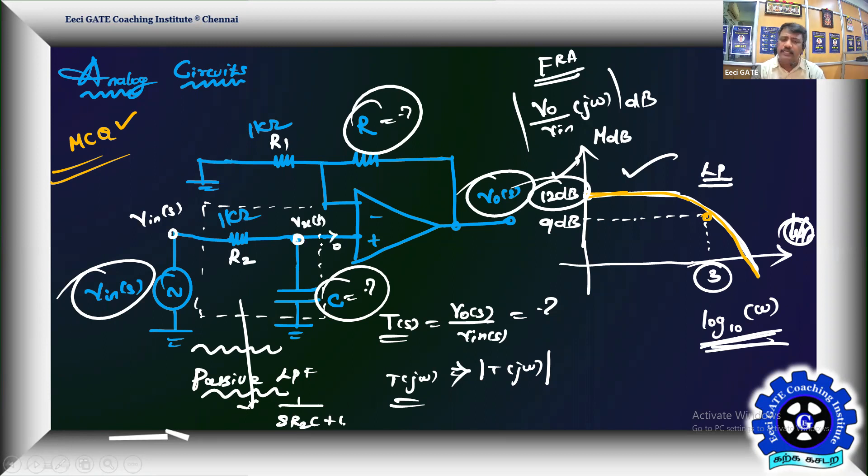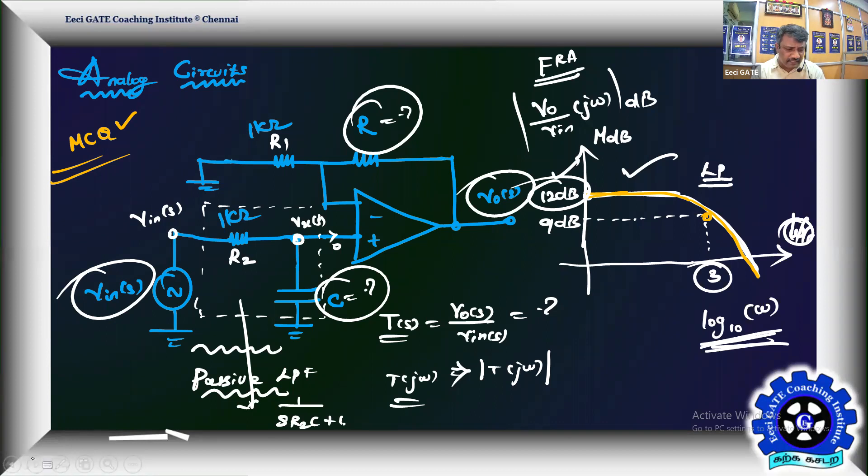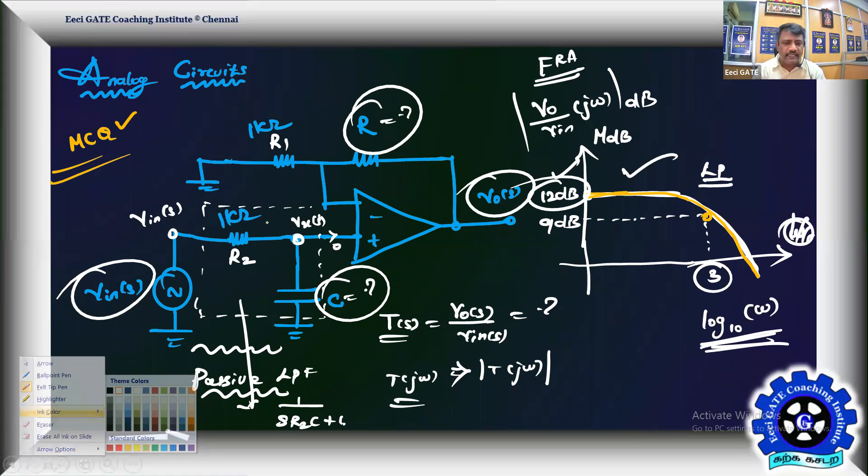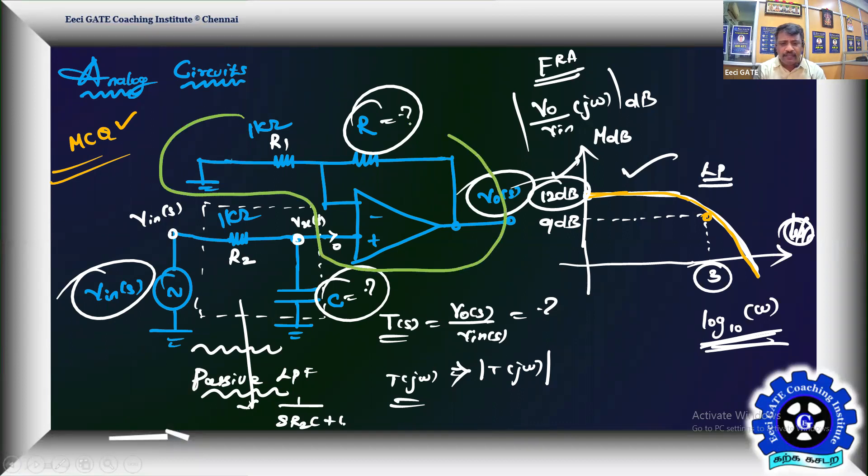This is your Vin(s), you can take it as Vx(s). Remember there is no current into the non-inverting terminal of the op-amp. The problem goes in two steps: first you need to find Vx(s)/Vin(s), that's the passive low pass filter. It's readily available from your mind, you can write it as 1/(sR2C + 1). Then we go for V0(s)/Vin(s). It is a cascading of two things: passive filtered and then amplified. The gain of the non-inverting configuration is 1 + R/1kΩ. I will call this non-inverting gain as k.